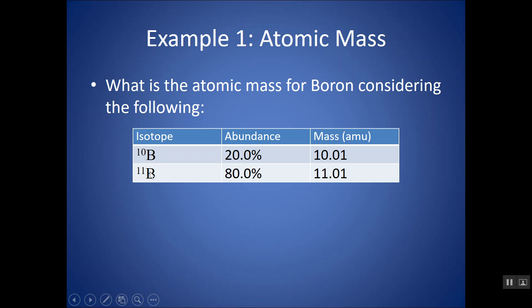One is boron 10. Remember, this is the mass number. One is boron 11. And I give you the percent abundance. About 20 percent is boron 10. About 80 percent is found as boron 11. And I give you the masses. So take a moment and try this example. Okay, so all you're doing is you're plugging into the atomic mass formula.